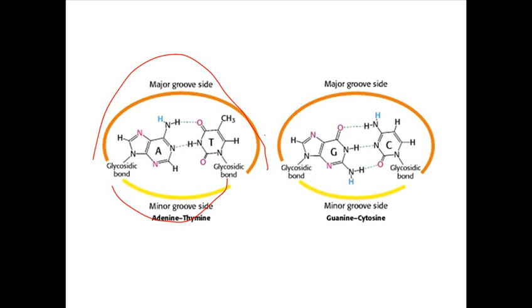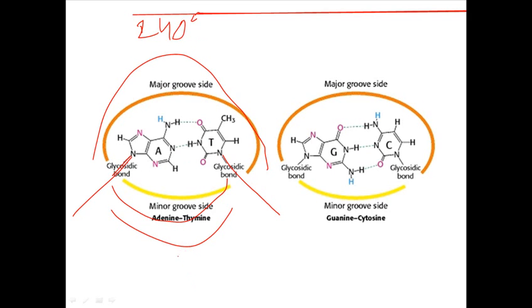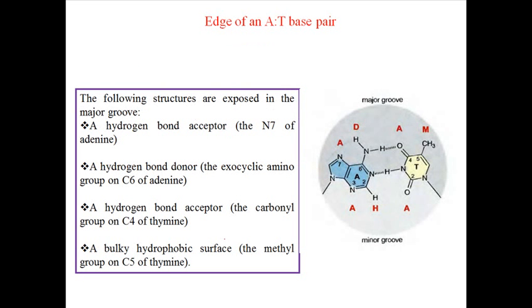Here is the interaction diagram showing the glycosidic bond. If you look at the bond angles, this is the 120-degree angle for the minor groove and this is the 240-degree angle for the major groove — the major groove angle is exactly double that of the minor groove. Looking at the structure of the major groove, we can find structural differences: the glycosidic linkages are 120 degrees in the case of the minor groove and 240 degrees in the case of the major groove.